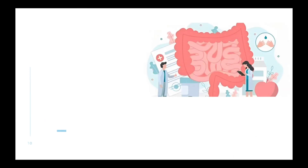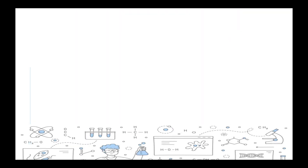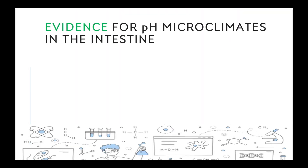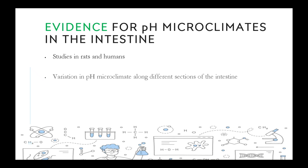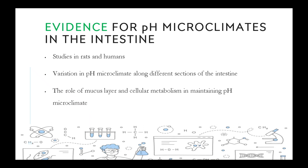Evidence for pH microclimate in the intestine. Under this topic, we have three subheadings: studies in rats and humans, variation in pH microclimate along different sections of the intestine, and the role of the mucous layer and cellular metabolism in maintaining pH microclimate.